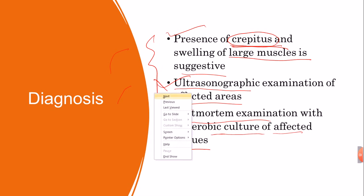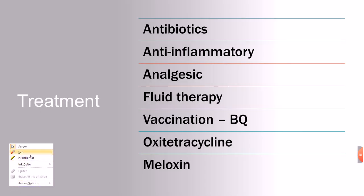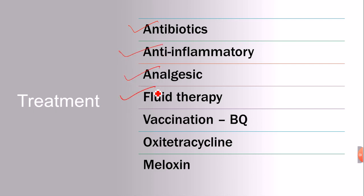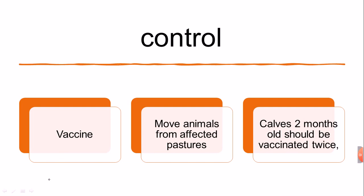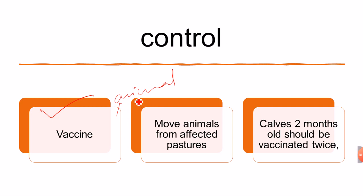For treatment of Black Leg disease: antibiotics, anti-inflammatory drugs, and glucocorticoid drugs are used. Florfenicol therapy and vaccination are very important. Oxytetracycline and meloxicam are specific drugs used. For control, vaccination is the basic and most important measure — it should be available for every animal on the farm throughout their life, as they are under constant risk of attack by such bacteria.